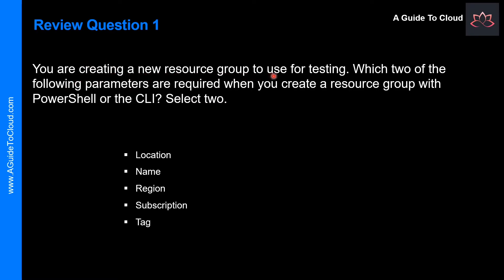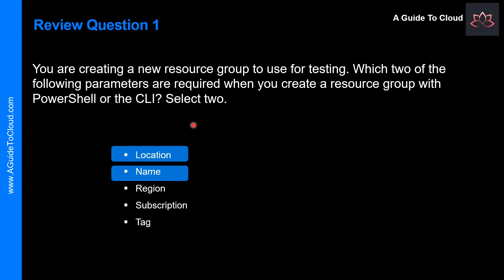You are creating a new resource group to use for testing. Which two of the following parameters are required when you create a resource group with PowerShell or CLI? Tag is optional, and subscription is not a required parameter either. Region is also not a default required parameter. The two required parameters when creating a resource group in PowerShell or CLI are location and name — used in New-AzResourceGroup and az group create respectively.